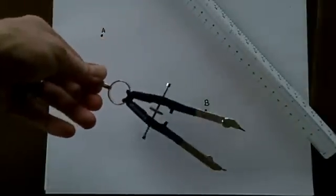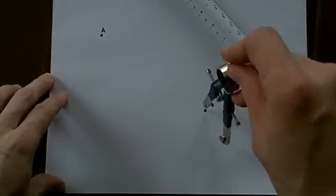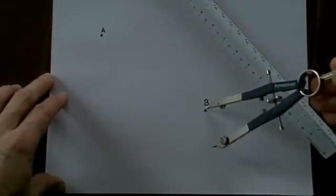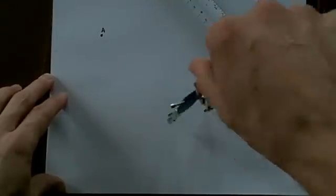First off, I just want to explain what a compass is. This is a compass. It's used to draw circles. You can use it when you put the point on any point, like I'm going to put the point of the compass on B. And then, as you can see, I can draw a perfect circle with a consistent radius around B.